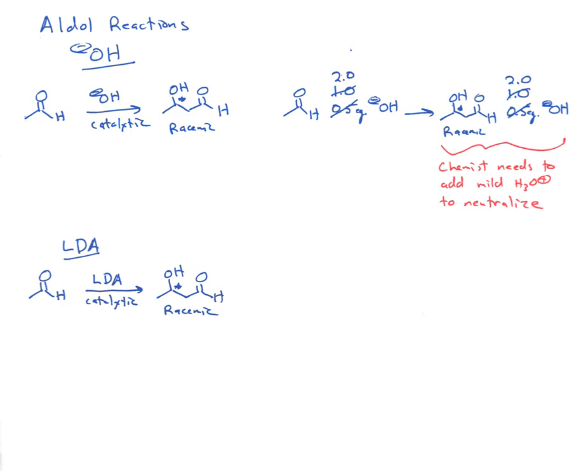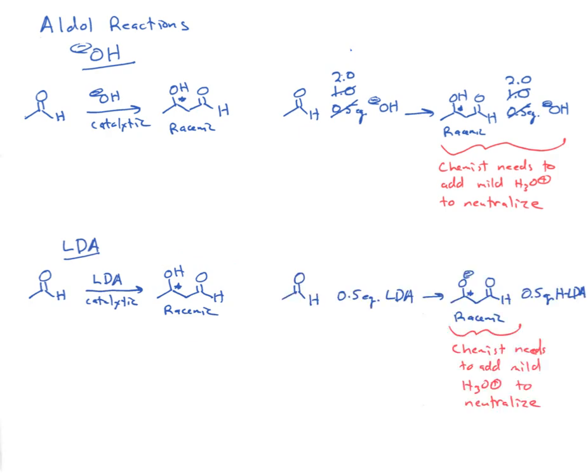Now let's think about LDA. A catalytic amount of LDA gives a beta-hydroxy aldehyde product, just like with hydroxide. But if we add half an equivalent of LDA, we're going to turn half of the aldehyde into its enolate immediately, which will then attack the remaining half of the aldehyde to create the alkoxide. There's no source of protons left, so our product is actually half an equivalent of the alkoxide, not the beta-hydroxy aldehyde. The chemist would need to add mild acid to get the beta-hydroxy aldehyde product.